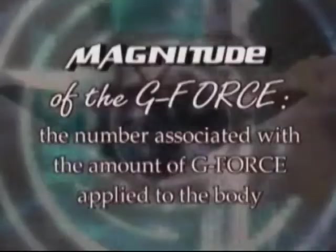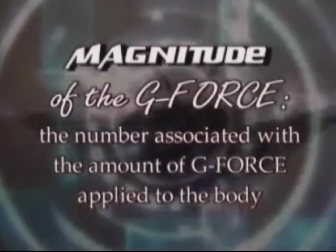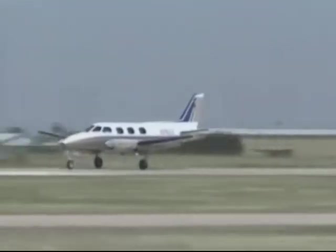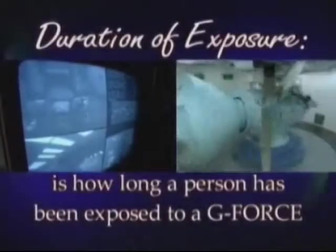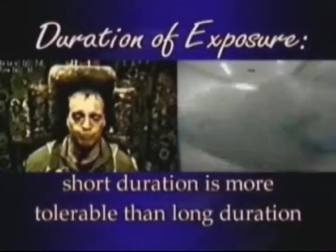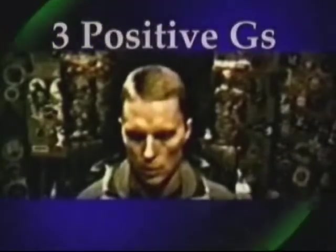There are several factors about G-forces that impact an individual's tolerance level. Magnitude of the G-force is the number associated with the amount of G-force applied to the body; a low magnitude G-force is more tolerable than a high one. General aviation pilots are rarely exposed to positive vertical G's higher than 2.5, while fighter pilots are routinely exposed to seven or more positive vertical G's. Duration of exposure is how long a person has been exposed to a G-force; short duration is more tolerable than long duration. Experiencing three positive vertical G's for several seconds is not difficult for the average individual, but having to endure it for over 15 seconds becomes physically challenging.